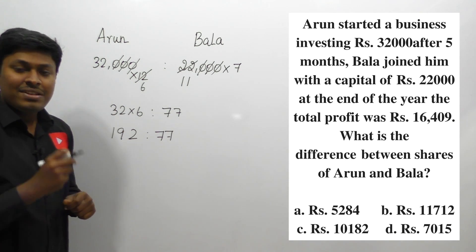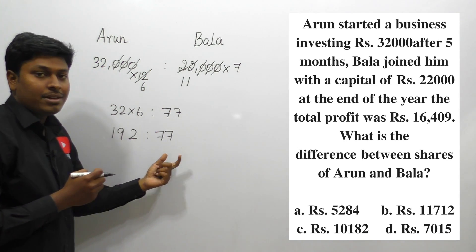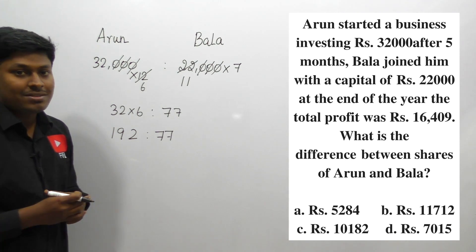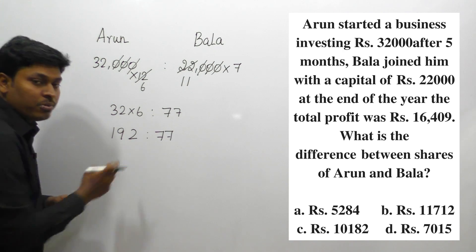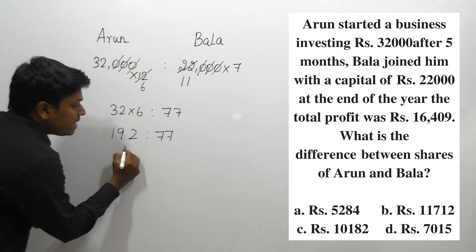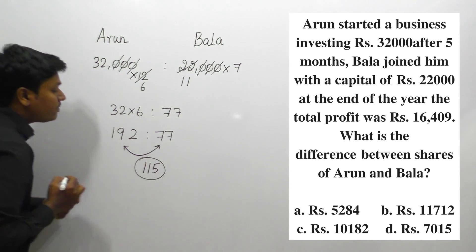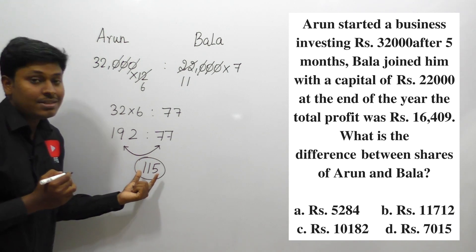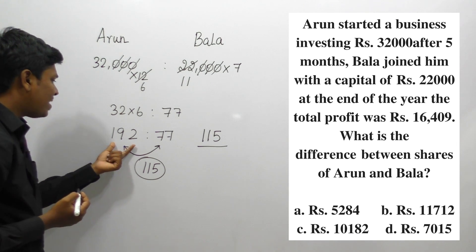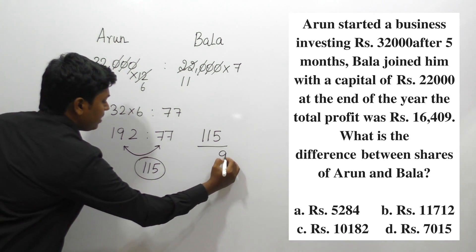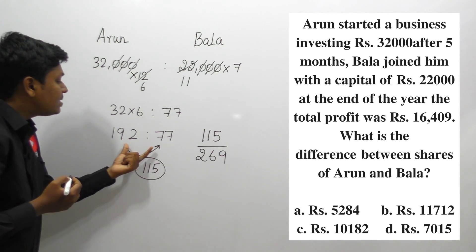Our target is to find the difference in their shares. My advice: don't find Arun's share separately and then Bala's share and then subtract. Directly find the difference in the ratio. So 192 minus 77 equals 115. Then 115 divided by the total, which is 192 plus 77 equals 269.